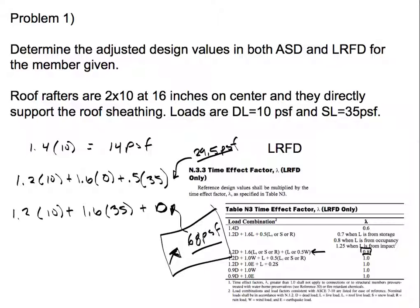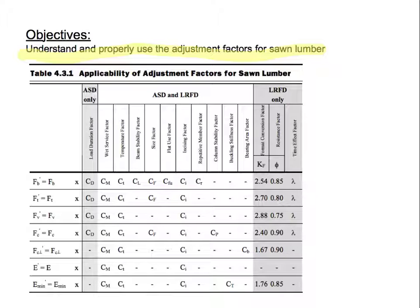This video was part one, covering just the load duration factor for ASD and LRFD. We still have a lot more factors to go through: the wet service factor, temperature factor, beam stability factor, size factor, flat use factor, repetitive member factor, and so on — there are so many factors to think about and talk about. Once I've covered all the adjustment factors, I'll do problems using all of them so you have a clear understanding of how to design for a wooden member for any anticipated loads. Thank you everyone, I hope this helped. Have a great day!